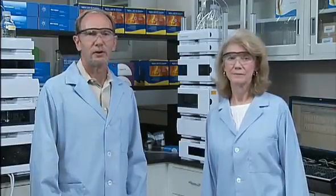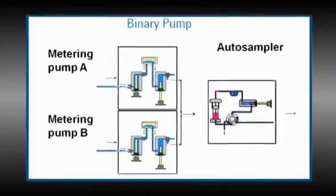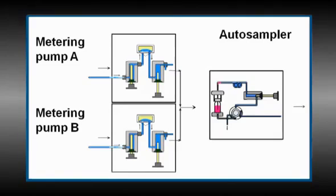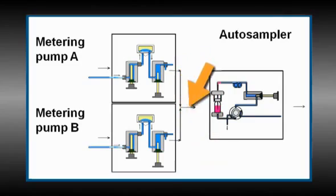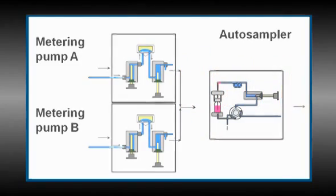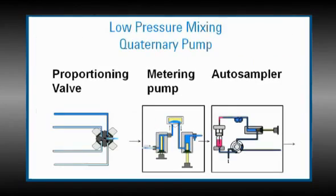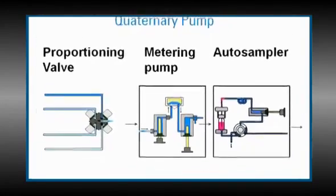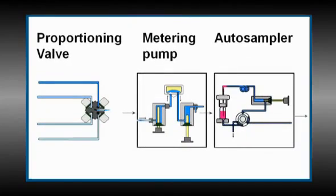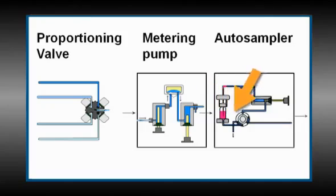Okay, let's talk about dwell volumes now. Sounds good. So, what is dwell volume? For high pressure mixing systems, dwell volume equals all the volume from where the solvents first meet, after the two metering pumps, to the head of the column. For low pressure mixing systems, dwell volume equals all of the volume from the proportioning valve, through the pump, and onto the head of the column.